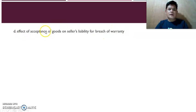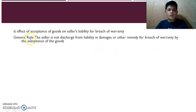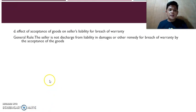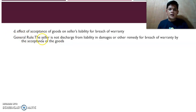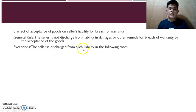Next, the effect of acceptance of goods on the seller's liability for breach of warranty. What if acceptance has already occurred but there is a breach of warranty — especially breach of warranty against hidden defects or breach of warranty against eviction? The general rule under Article 1585 is that the seller is not discharged from liability in damages or other remedy for breach of warranty by the mere acceptance of the goods.